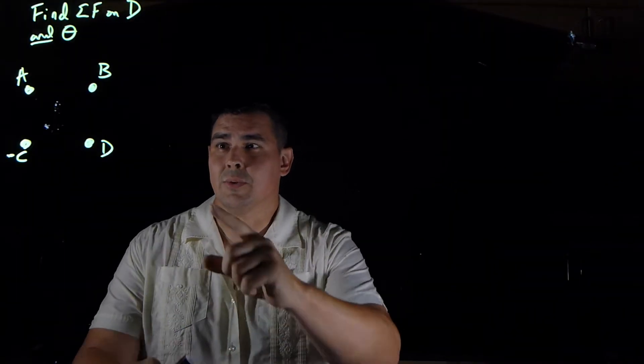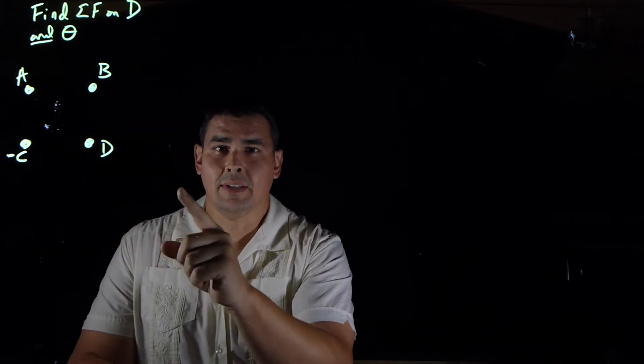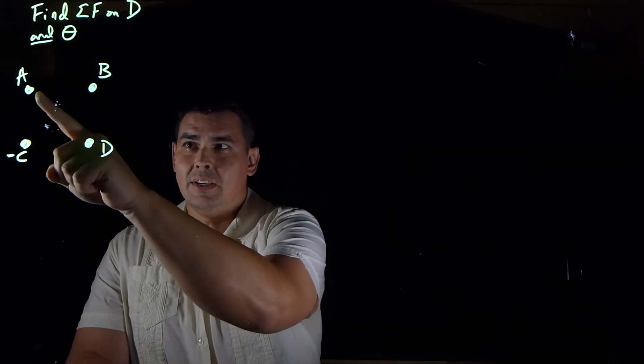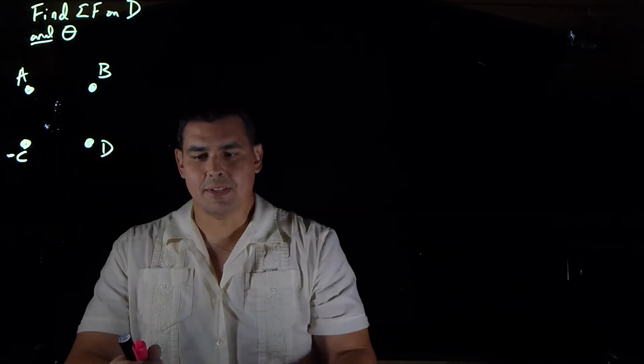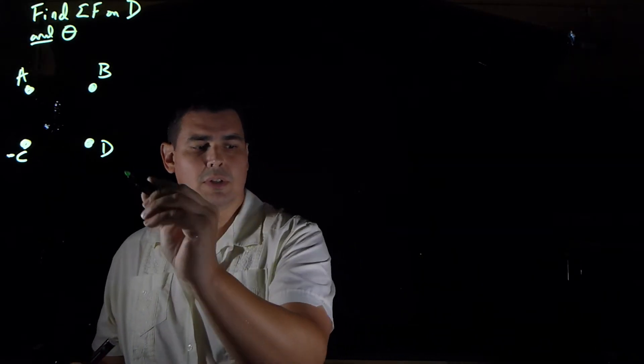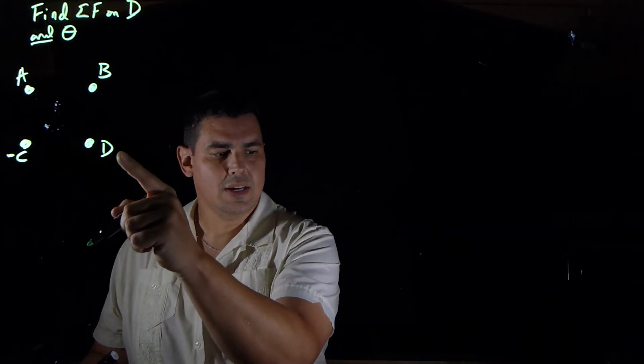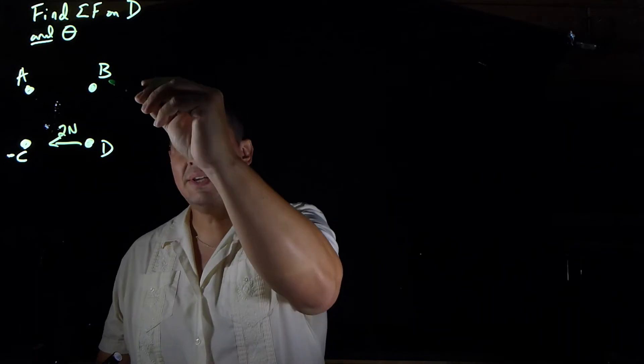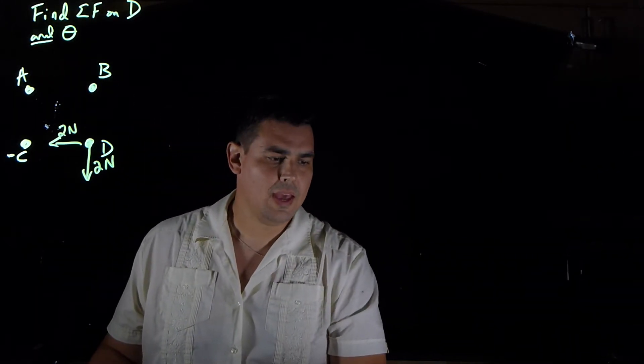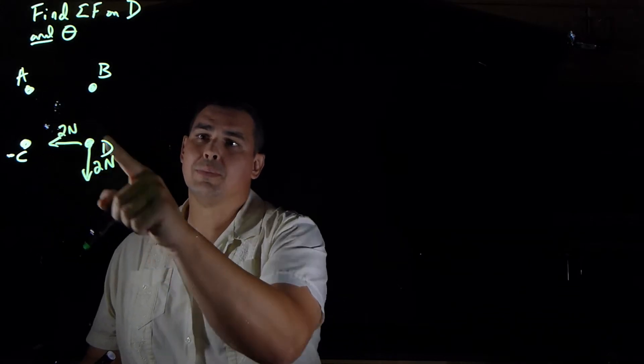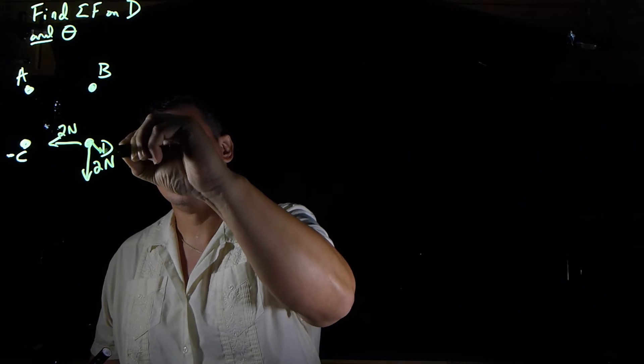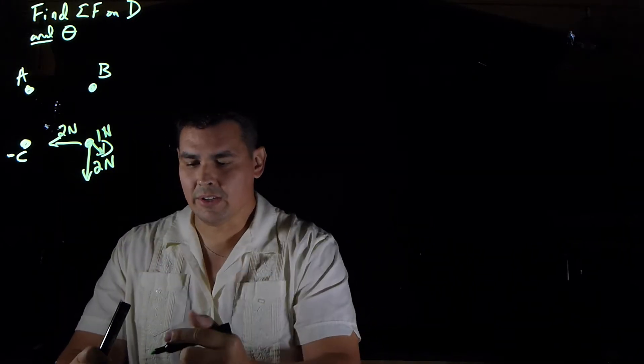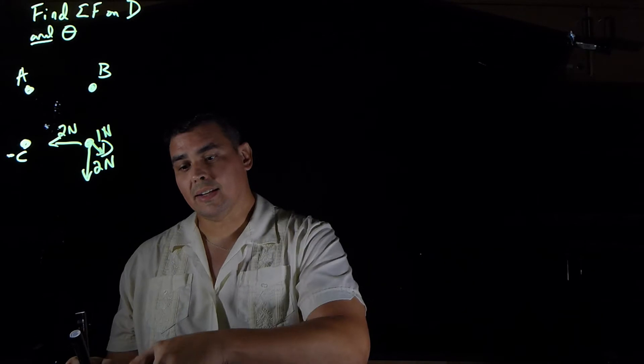Okay, so what about an example like this? So now there's four charges, and same kind of thing. We want to find the net force on D and the angle. So here's charge D. So charge D is being repelled by A and B, but it's being attracted by C. And so let's draw those forces. Again, I'm just going to give you the numbers. So let's say that C is attracting D with a force of 2 newtons. Let's say that B is pushing on D with a force of 2 newtons. And let's say that A is pushing on D with a force of 1 newton. Okay, so again, I have all these vectors right here. I need to redraw it using superposition so that I can add the vectors to get the result.